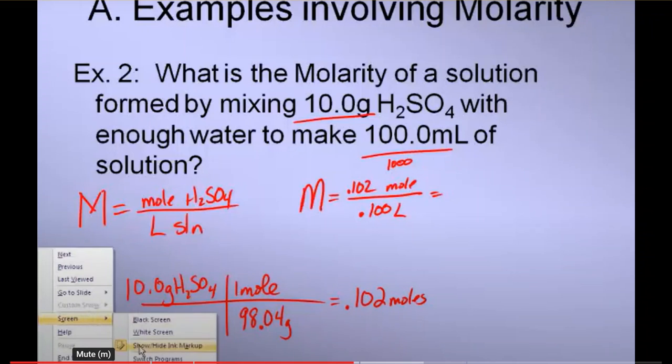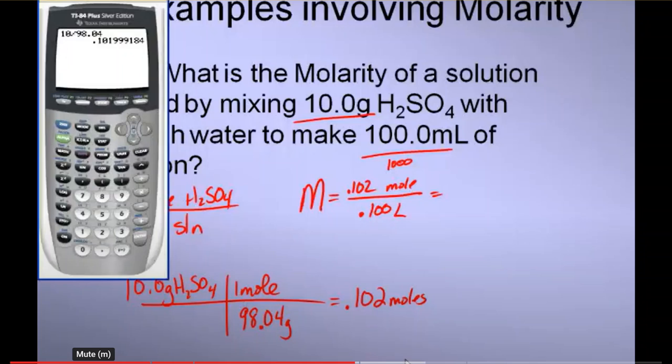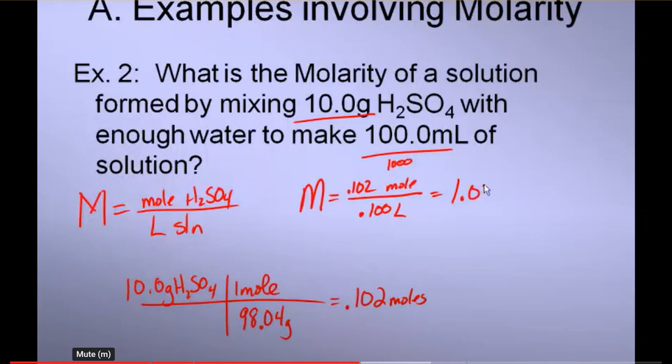And, hopefully, you'll be able to see the math here already. But, I'm going to do the calculation anyway. Divided by 0.1 is 1.02 molarity. Now, notice, you must include the M. This is the unit. Okay? Muy importante.